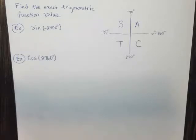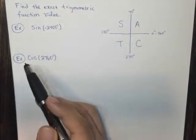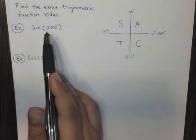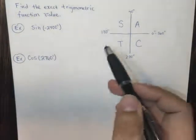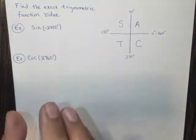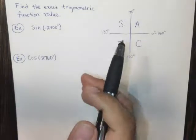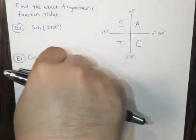Well, a coterminal is an angle that is basically the same. It starts and ends at the same point as this, but it differs by a factor of 360 degrees. So it's just rotationally the same. It starts and ends at the same point, but it's a different number value, because you've rotated so many times.